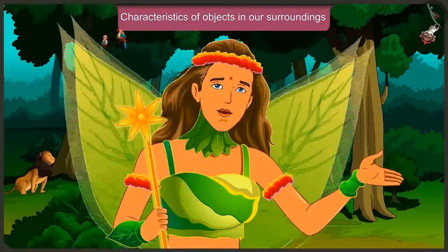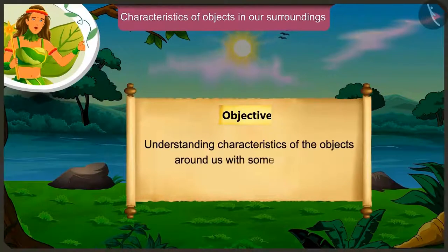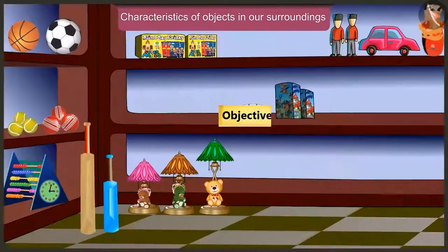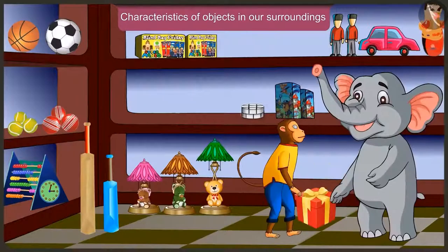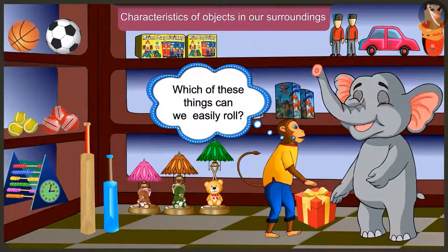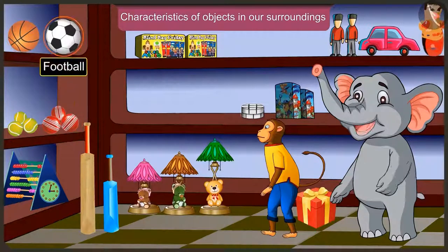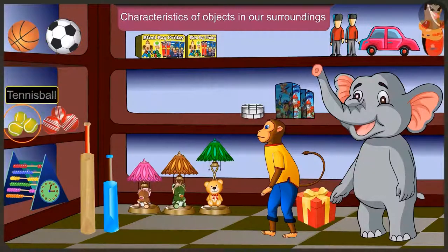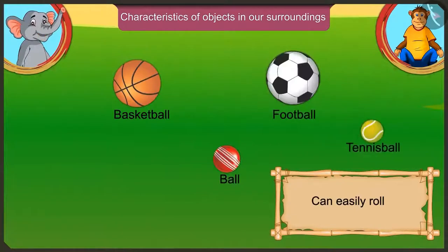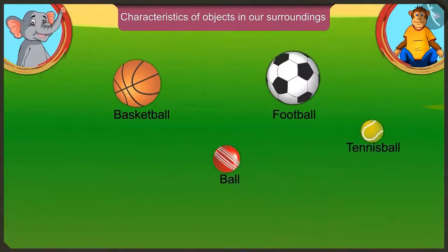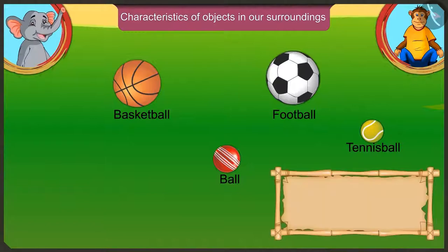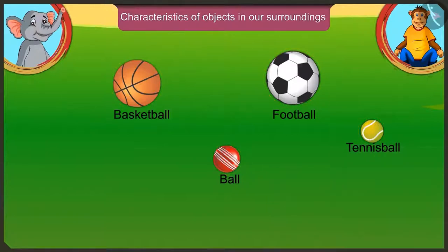Today we will understand the characteristics of the objects around us with some examples. Which are the things here which can be easily rolled? We can easily roll basketball, ball, football and tennis ball, because they don't have any corners and they have a curved surface.